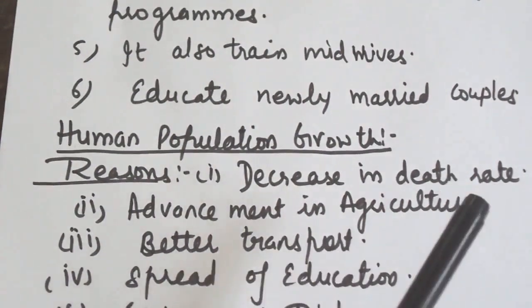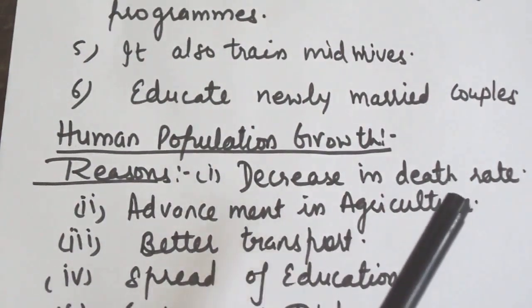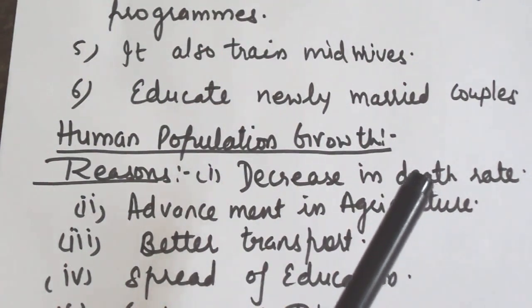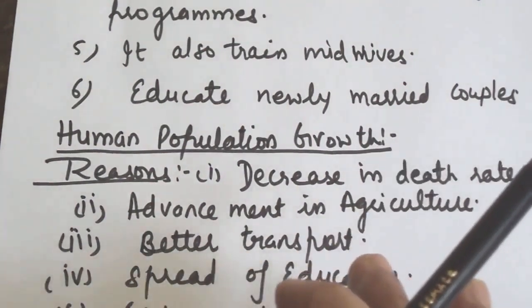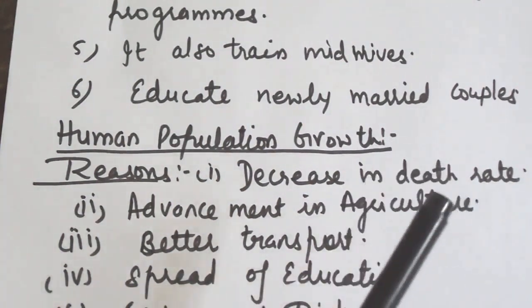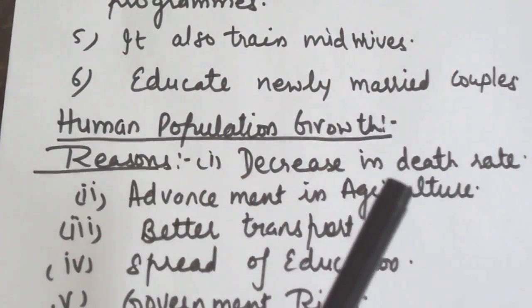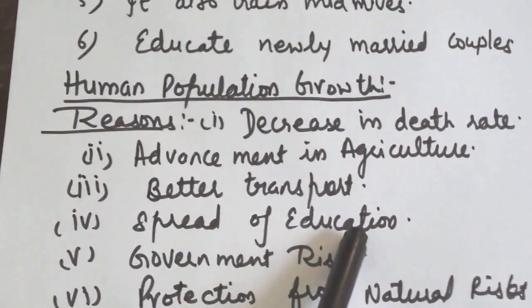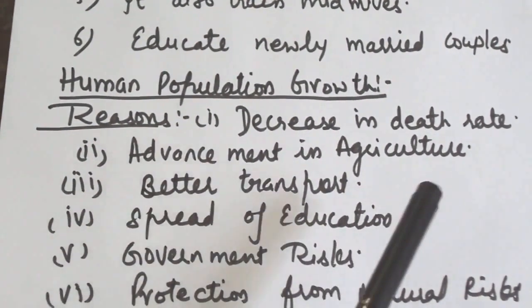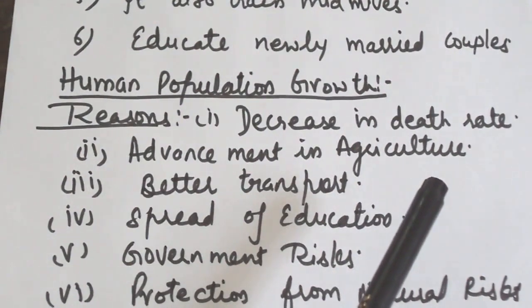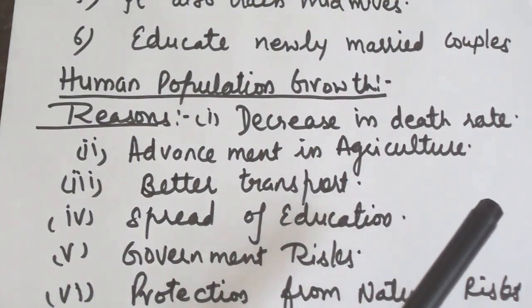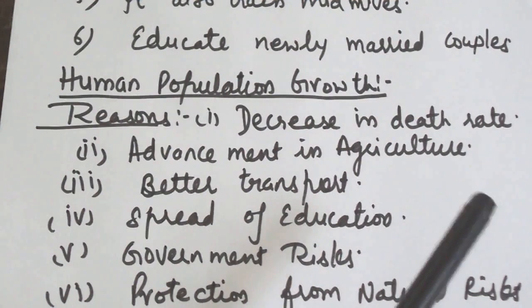Second is better transport facilities. Advancement in the modern transport system has helped to carry food from surplus regions to scarcity regions, which eliminates famines. Next is spread of education. Government efforts to provide education to all — whether young, adult or old — by implementing various schemes and opening schools and colleges even in villages have helped in the removal of misbeliefs.